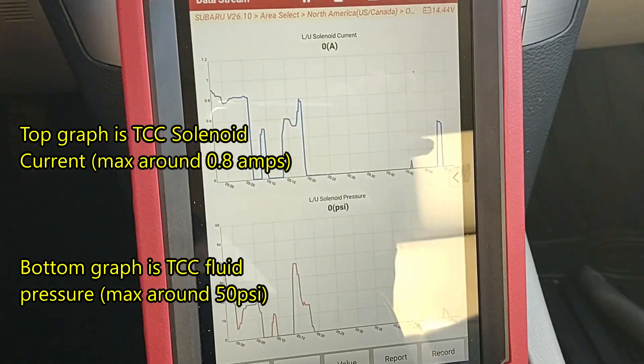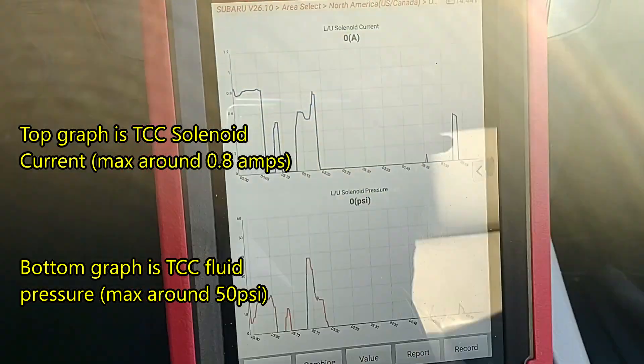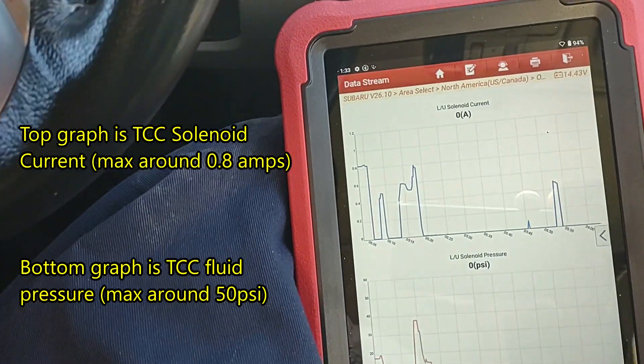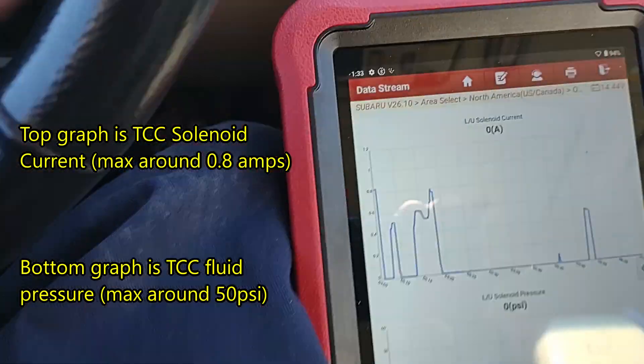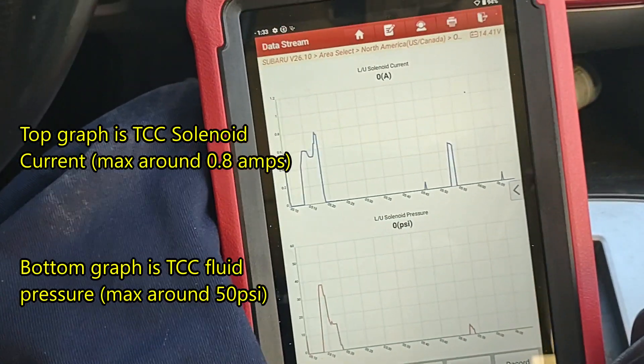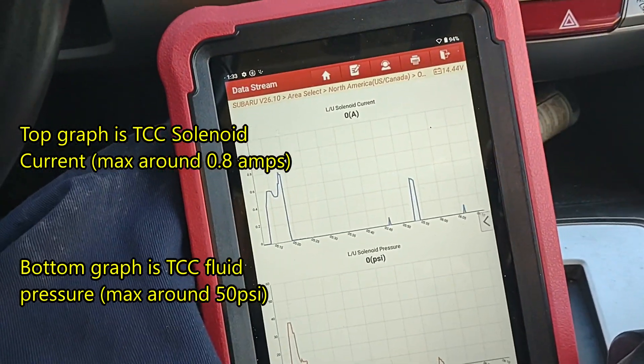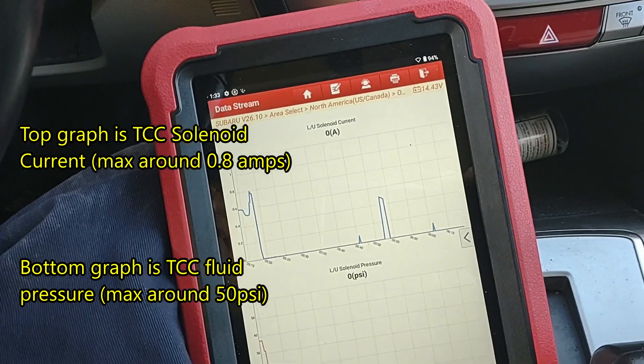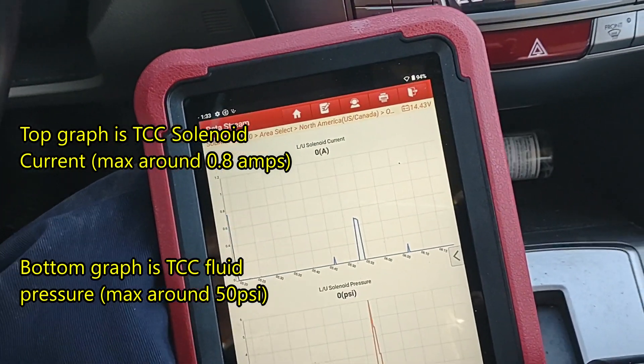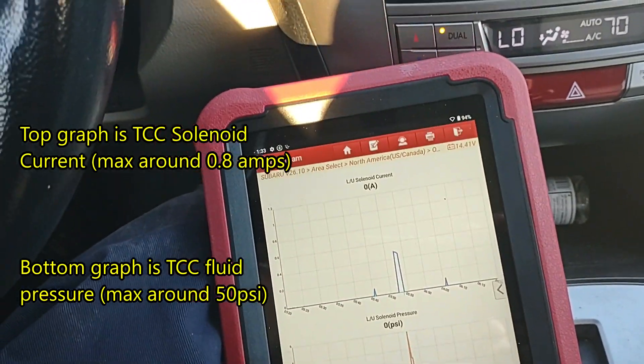It was transitioning in and out of that pressure range where it was doing a shutter every time, and it never shuttered once. All I did was put two tubes of shutter fix, the Lube Guard shutter fix, in the transmission through the dipstick hole. I drove it about four or five miles now.